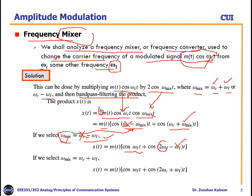In the second case where ωmix equals ωC plus ωI, X(t) = M(t)·cos(ωI·t) + cos((2ωC + 2ωI)·t). After multiplying M(t) with 2cos(ωmix·t) we get X(t) equal to this. Our desired goal is to achieve the frequency component M(t)·cos(ωI·t), so we need to separate this signal. Let's see how in the next slide.